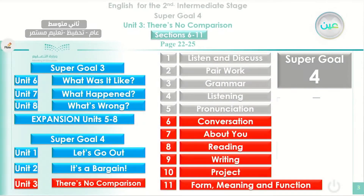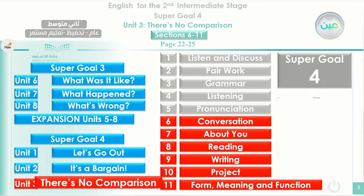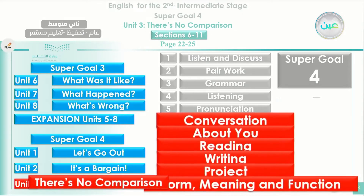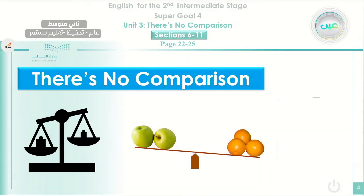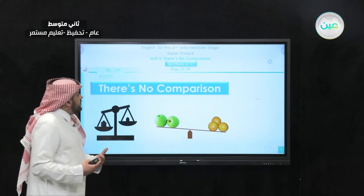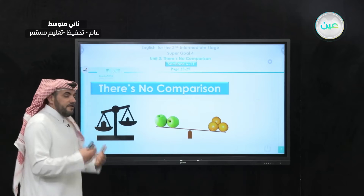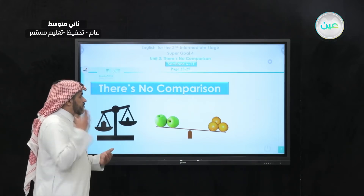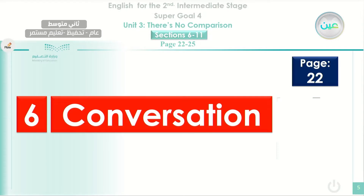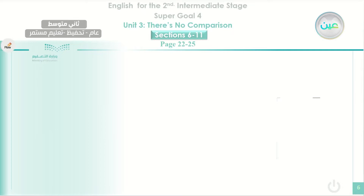Today we are ending up our unit, which is Unit Three. The unit is titled 'There is no comparison.' Today we are going to study six sections: conversation about you, reading, writing, project, form, and meaning and function. We introduced the unit in the previous lesson — the title means we are going to concentrate on comparing two things, called comparative form, and comparing one thing to others, called superlative form. We start with the first section, which is number six — conversation — found on page 22.